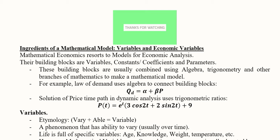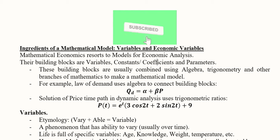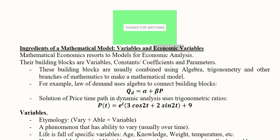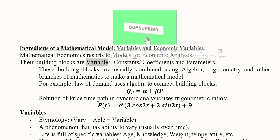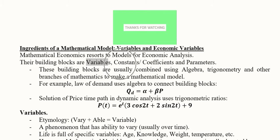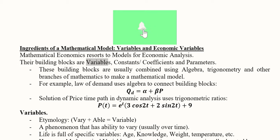We have variables in a mathematical model and they can be simple variables of mathematical nature or economic variables of economic nature. In addition to variables, we have constants, we have coefficients, and we have parameters. These are the building blocks that develop an algebraic equation or trigonometric equation, and other branches of mathematics are also dependent upon them.